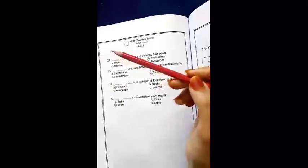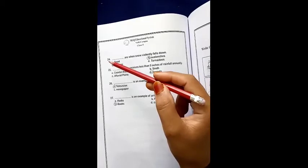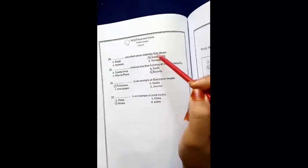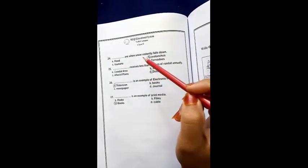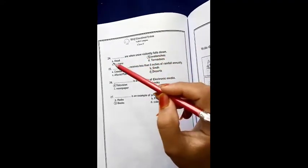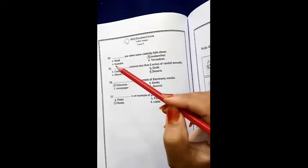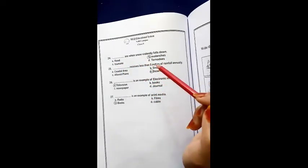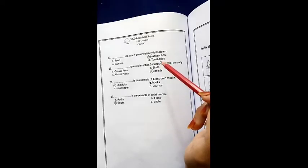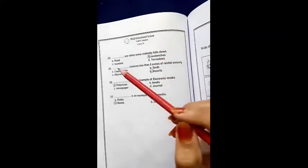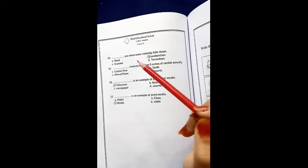Next and last MCQs page is 48. We have MCQs number 24. Dash or when snow violently fall down. A, Flood. B, Avalanches. C, Tsunami. D, Torrent. Flood, Avalanches, Tsunami, Torrent. So our correct answer is option B. B, we have circle. Avalanches, we have here right.